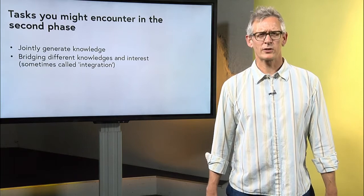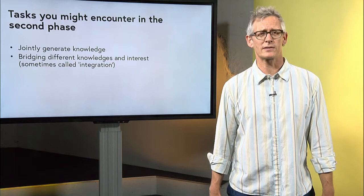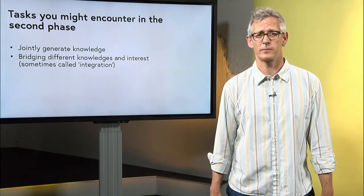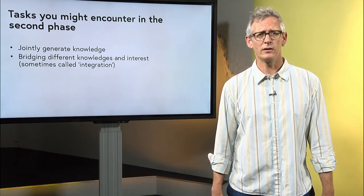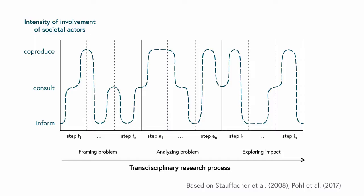The collaboration of researchers from different disciplines and actors of further societal sectors in transdisciplinary research is a dynamic process. Stauffacher et al. call it a functional dynamic process, symbolized by the blue line. Functional means that not all societal actors have to be involved in the same intensity all the time. Rather, researchers of a particular discipline or stakeholders of a specific sector of society might be highly involved in some steps and not in others.